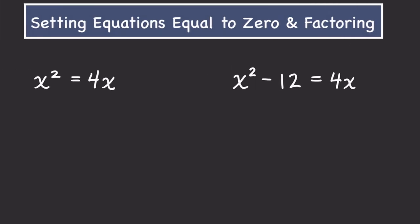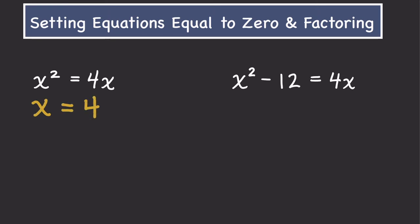Now let's talk about a scenario when just solving for x won't work. For example, x² = 4x. We might be tempted to divide both sides by x and get x = 4. But we've actually lost one of the solutions there. If x happened to be equal to 0, that equation is also going to work. So this is not technically the right way to solve this equation.